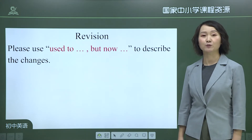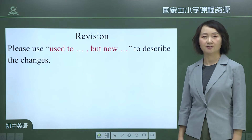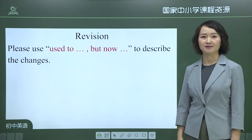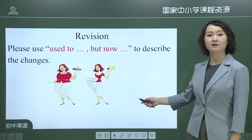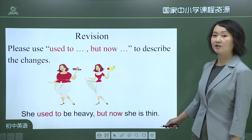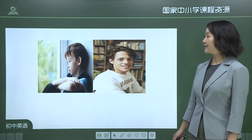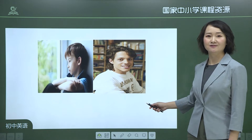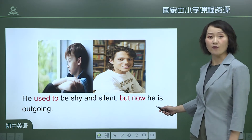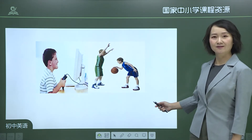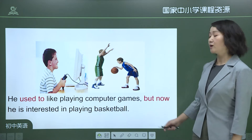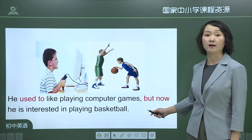First, let's have a revision of Period 1. Use 'used to... but now' to describe changes. She used to be heavy, but now she is slim. He used to be shy and silent, but now he is outgoing. He used to like playing computer games, but now he is interested in playing basketball.